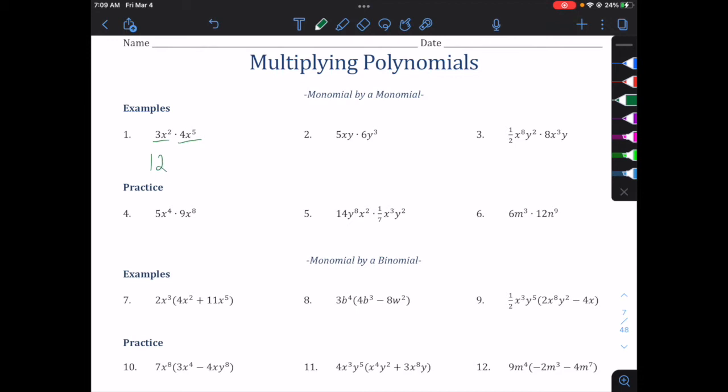Now, we're ready to multiply some variables. Remember our properties of exponents. If we multiply two things with the same base, we add their exponents. So, x to the second times x to the fifth is x to the seventh, and that's our answer.